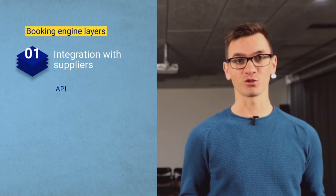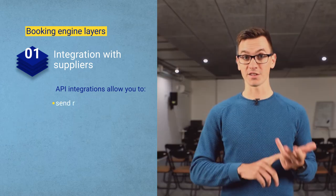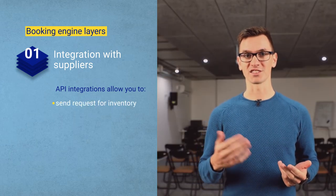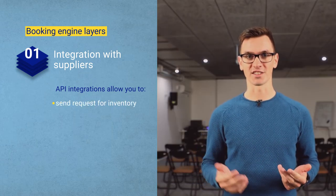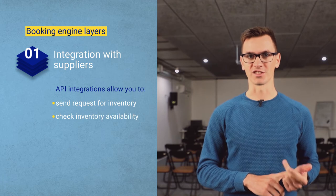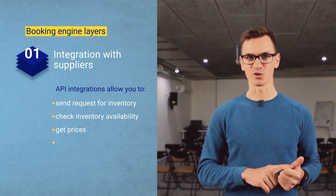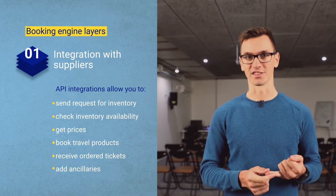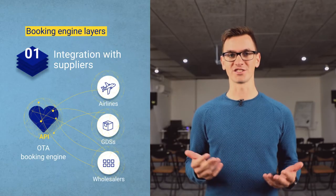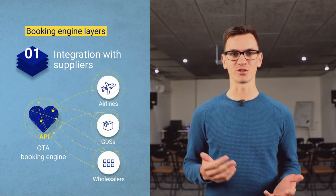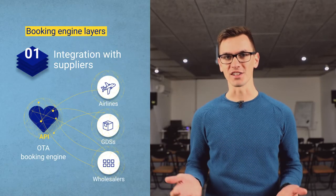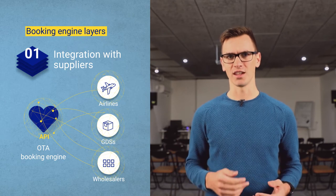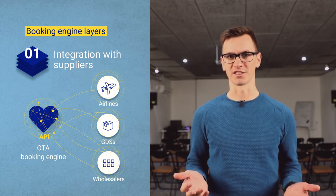These integrations allow you to do a number of things: request inventory — flights, hotels, cars, and others — check availability for this inventory, get prices, book those products, receive tickets for them, and then ancillaries. So the integration layer takes care of how and where you get this raw information. Usually you are integrated with one or two GDSs, several hotel suppliers if you sell hotels, and several other travel product providers.